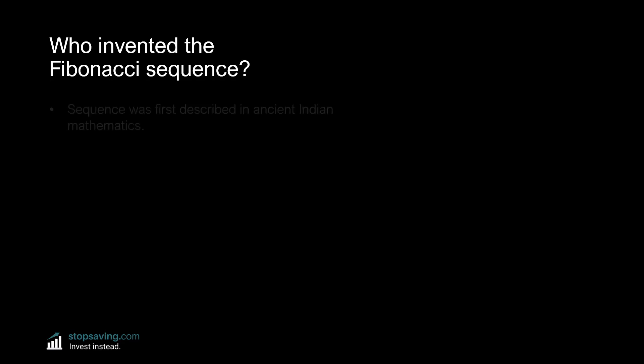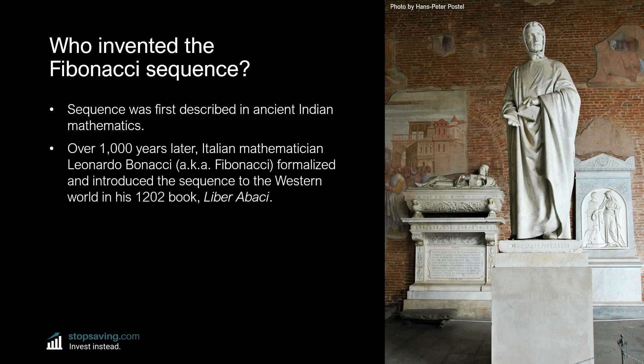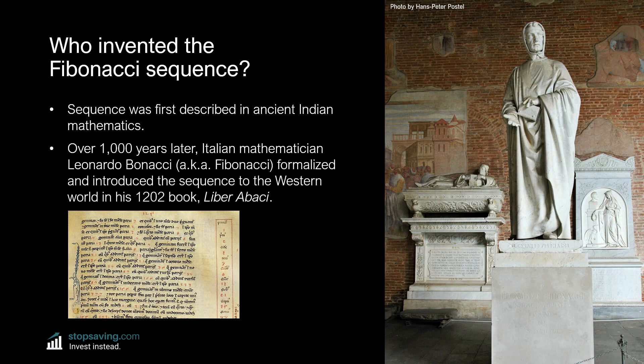The Fibonacci sequence is an ancient mathematical concept — and I really wasn't kidding. The sequence was first described in ancient Indian mathematics, and over 1,000 years later, an Italian mathematician named Leonardo Bonacci, later known as Fibonacci, formalized and introduced the sequence to the Western world. That was in his 1202 book, Liber Abaci. This photo shows a statue of Fibonacci in the Composanto di Pisa, and here's an excerpt of Liber Abaci where Fibonacci explains some of the maths, if you happen to speak old-school Latin.